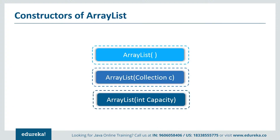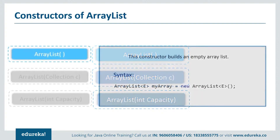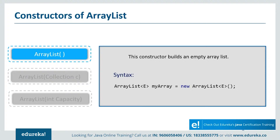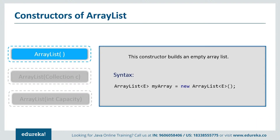Now let's see the various constructors supported by Java ArrayList. First, ArrayList() — this constructor builds an empty ArrayList. Coming to syntax, 'my array' is a reference to an ArrayList that holds references to objects of type E. The array has an initial capacity of 10 cells, although the capacity will be increased as needed as references are added to the list, and cells will contain references to objects of type E.